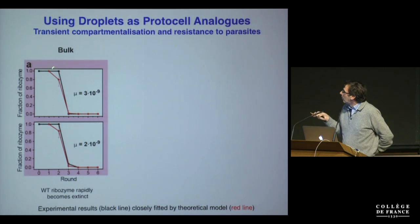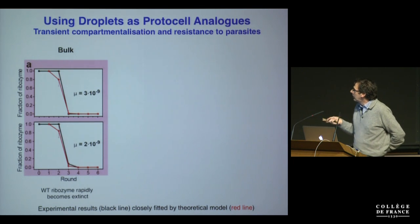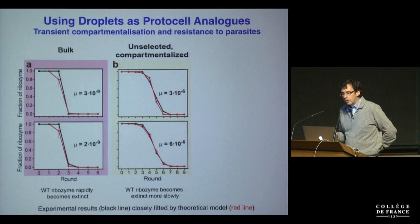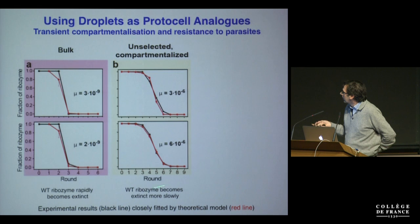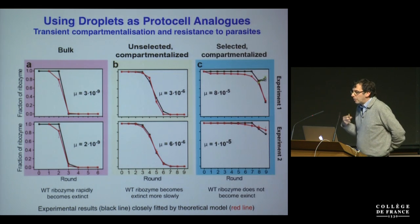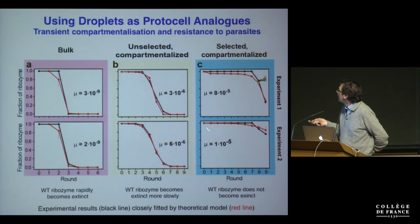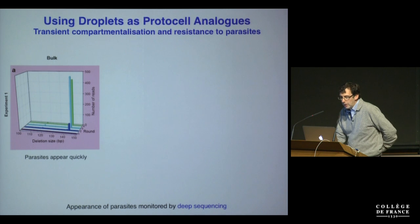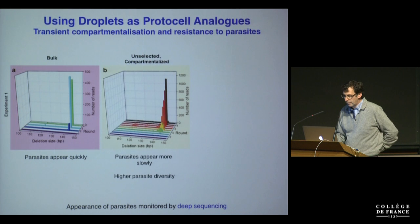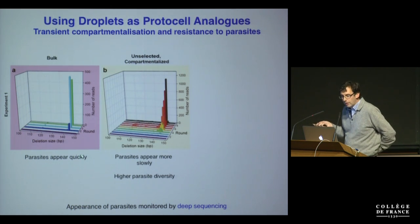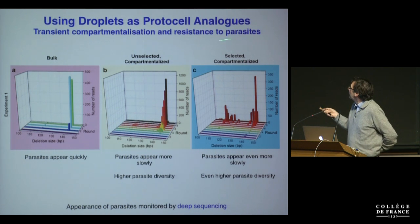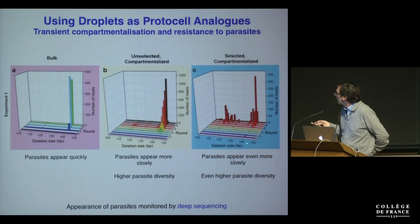Looking at what's happening to the original wild-type ribozyme: in bulk it becomes extinct by around round three or four. If you compartmentalize the reaction but don't select based on catalytic activity, the ribozyme also becomes extinct but takes a bit longer. But if you also select the compartments based on catalytic activity, the wild-type ribozyme has not become extinct by around round nine. Monitoring by deep sequencing: in bulk, parasites appear very quickly; with compartmentalization but no selection, parasites appear more slowly with higher diversity; with compartmentalization and selection, parasites appear even more slowly with much higher parasite diversity.